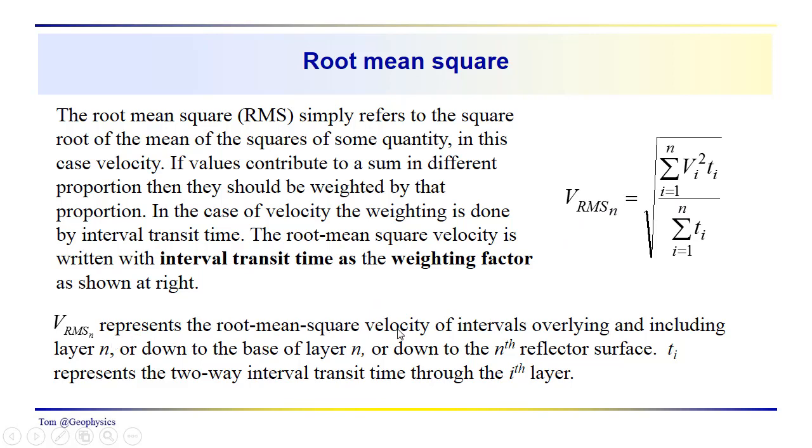So this is just the root-mean-square velocity of intervals overlying and including the nth layer, down to the base of layer n. And t_i, again, is just the two-way interval transit time through the ith layer. So this is kind of like a weighting term.